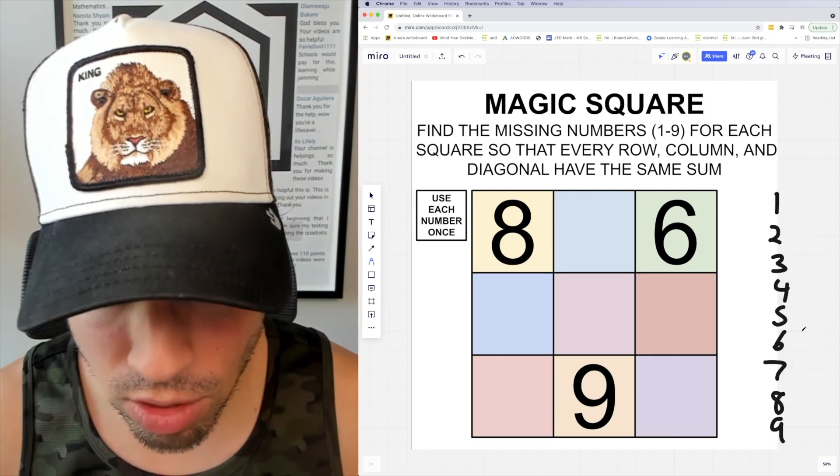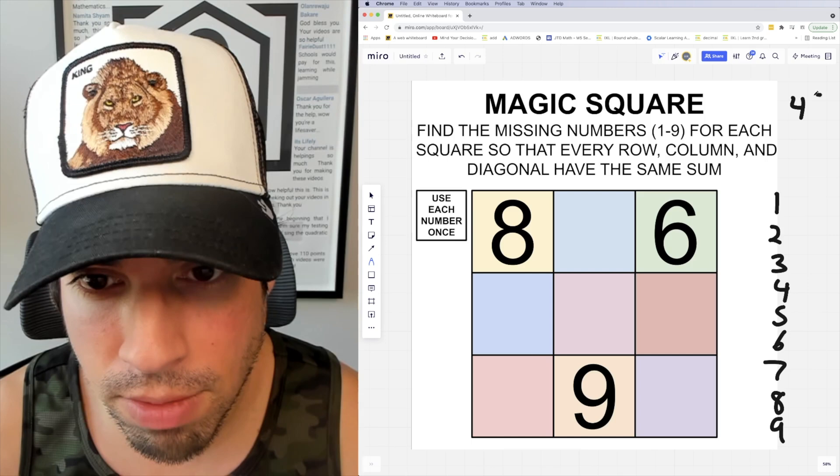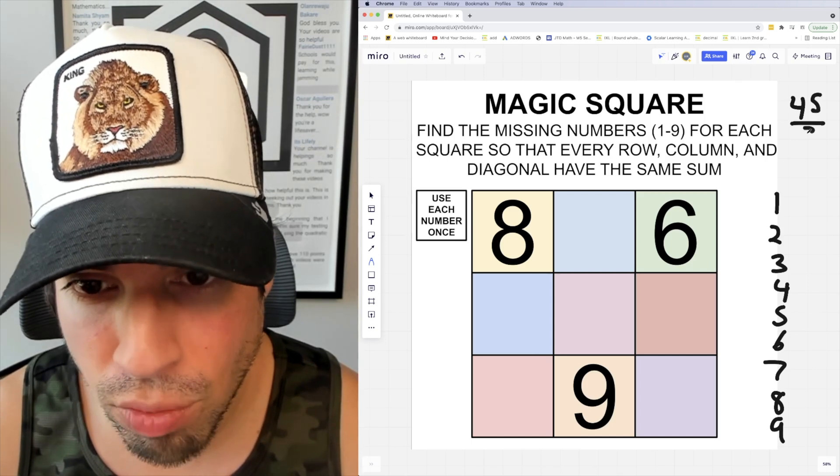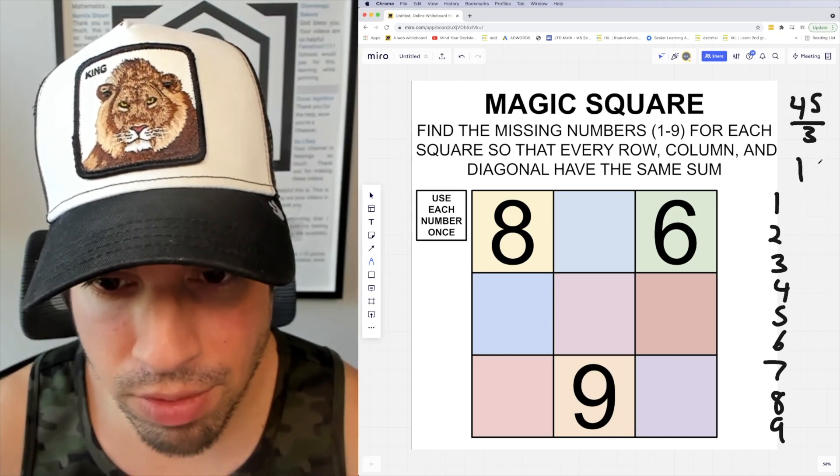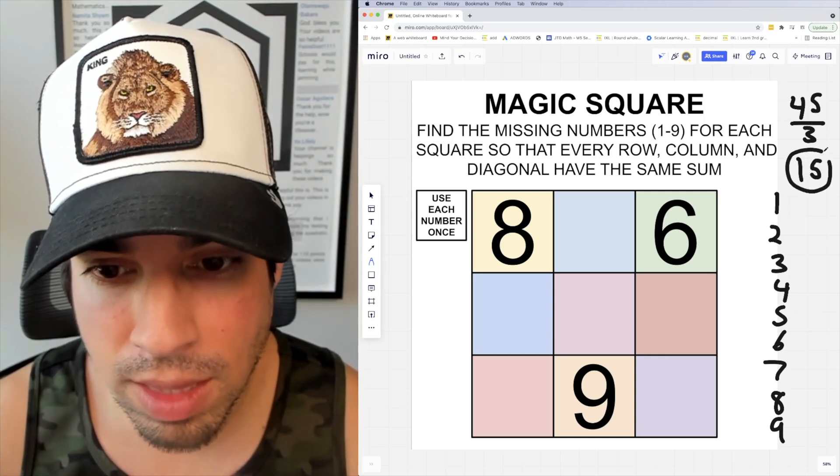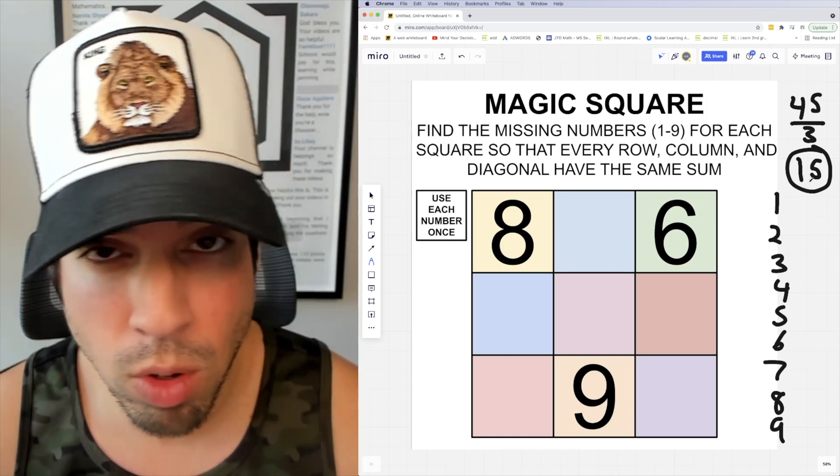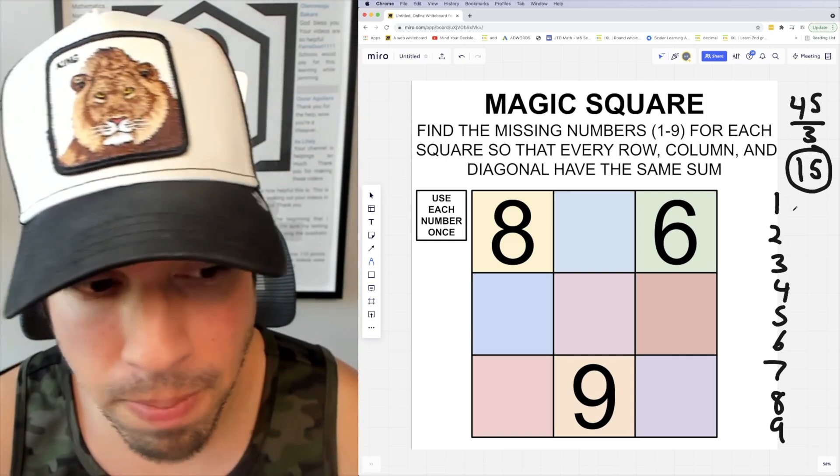...is to add these all together, which equals 45, and then I'm going to divide that by three because we're putting these in groups of three. Since 45 divided by three is 15, that means that's the magic sum that I'm going for in every row, column, and diagonal. So we can proceed from there.